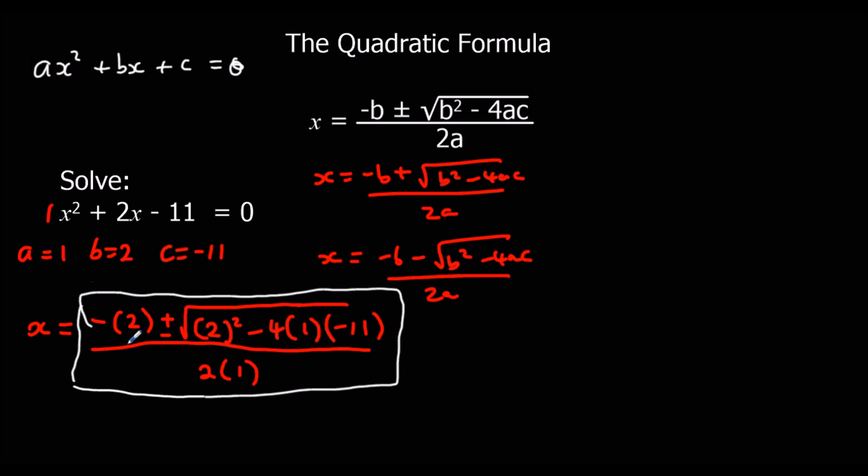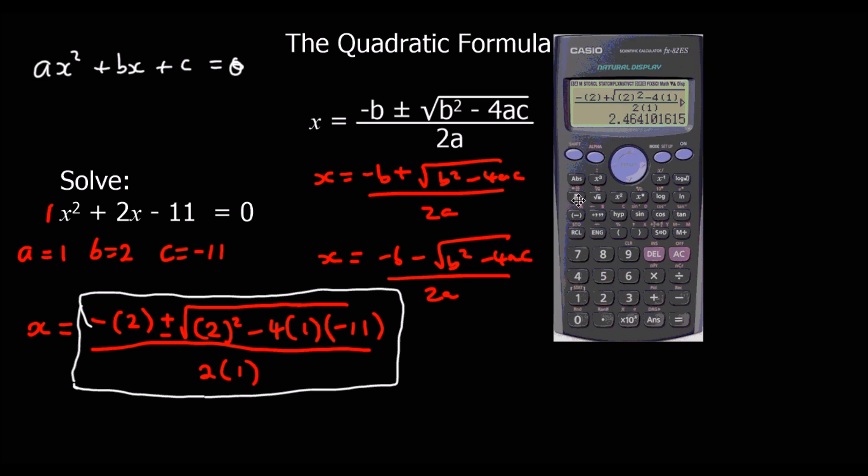So we're going to type it in twice, once with a plus and once with a minus. We do it by pressing this fraction button here. Press the fraction button first, and then type in the top row exactly how it looks, but just with a plus here to start with. You can't actually see the end of it. It does say minus 11 on the end there. Exactly how it looks.